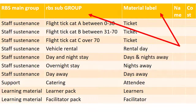You add your resources and set up the resource breakdown structure as a material resource. In this slide I explain the resource breakdown structure. The RBS means the main group of resources, and in this specific instance I have various main groups: staff sustenance, support, and learning materials. That is the RBS, and you put it in the RBS column. Then you can have subgroups — for example, flight ticket category A.